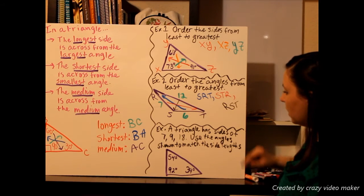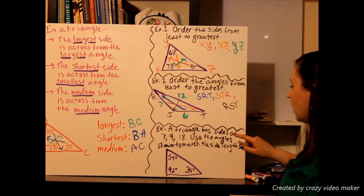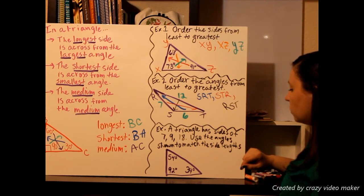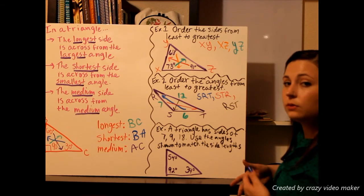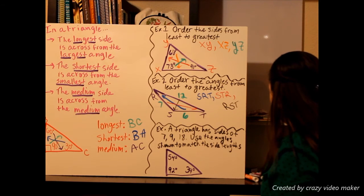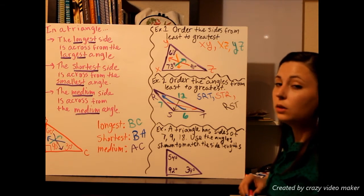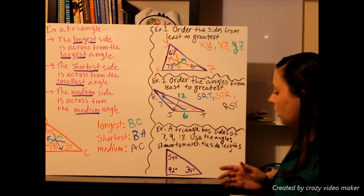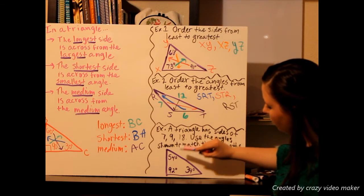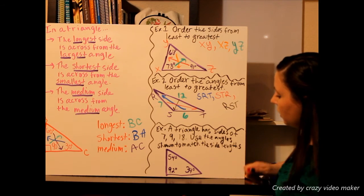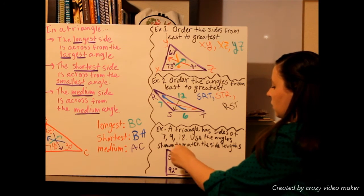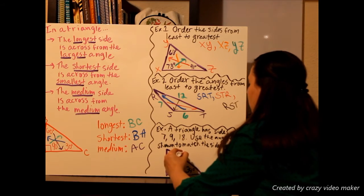Our final example: a triangle has sides of 7, 9, and 18. Use the angles shown to match the side lengths. They've given us the angles and we have to put the 7, 9, and 18 on the correct sides. I'll start with my longest side — I know that's going to be directly across from my largest angle. With angles of 92, 54, and 34 degrees, the 92 is the biggest. I draw a straight arrow from that angle across, and the side it points to gets the length 18.